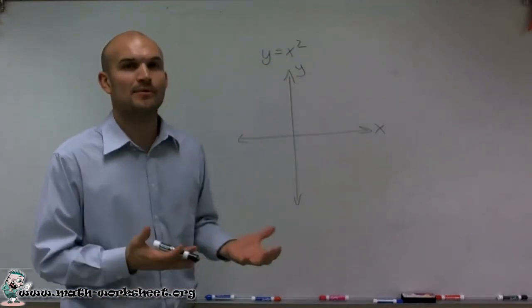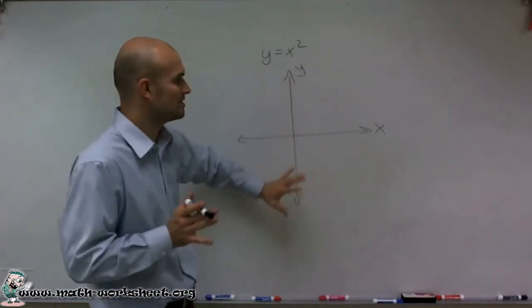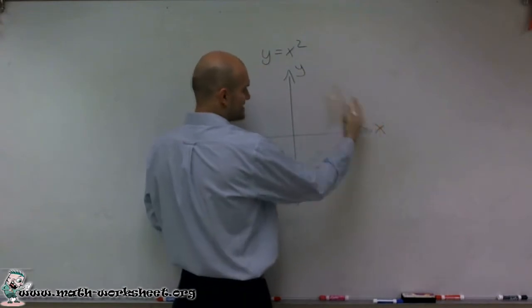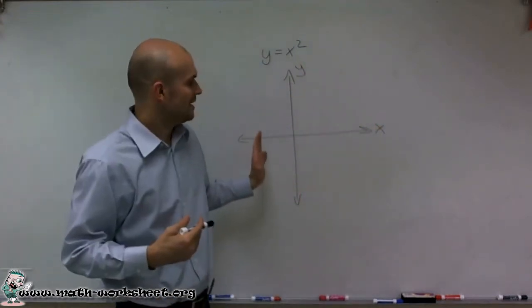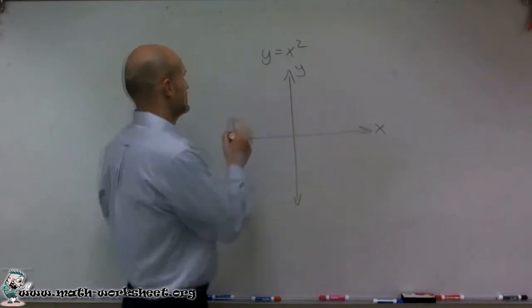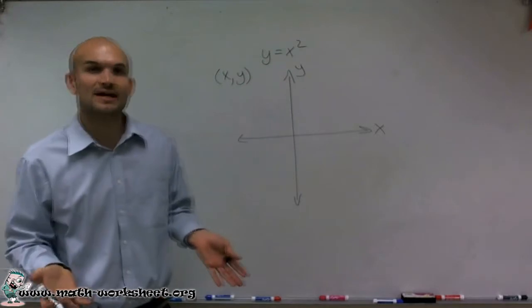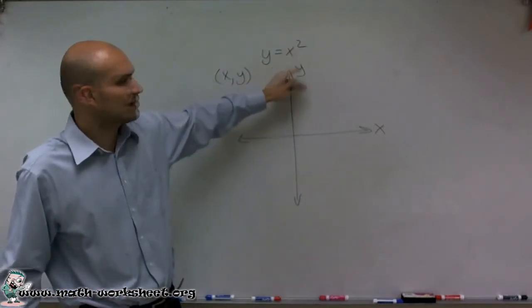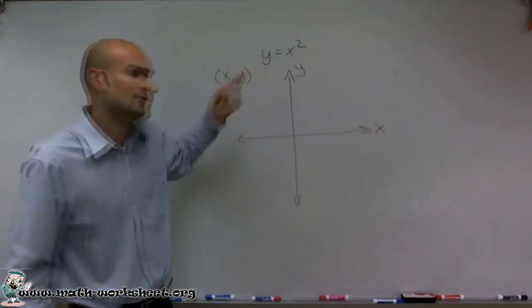If you remember, when we first learned how to graph lines, the first way — even the Cartesian coordinate system — is remember we have an x-axis and a y-axis, where a coordinate point has an x and a y-coordinate. So what I'm going to do is pick a set of points and then plug them into my equation to find the x and the y values.